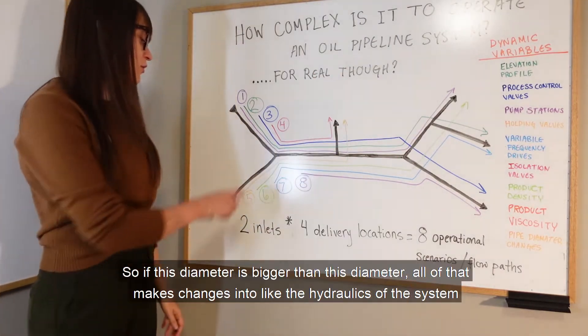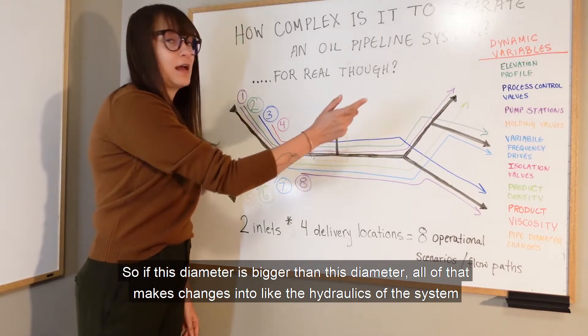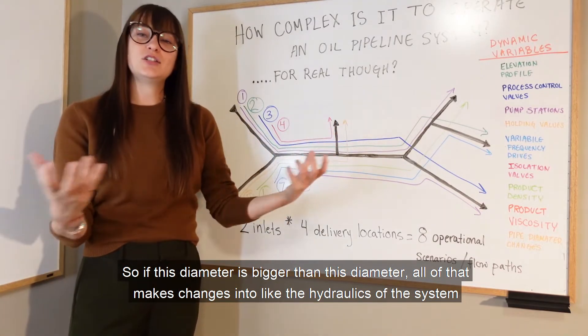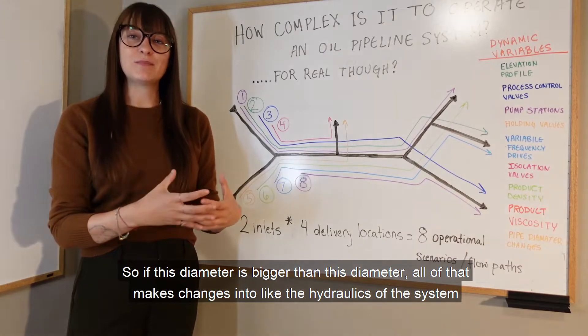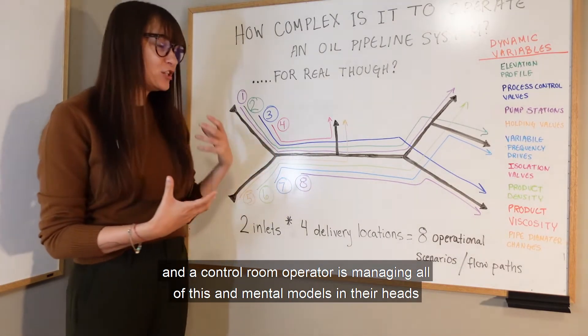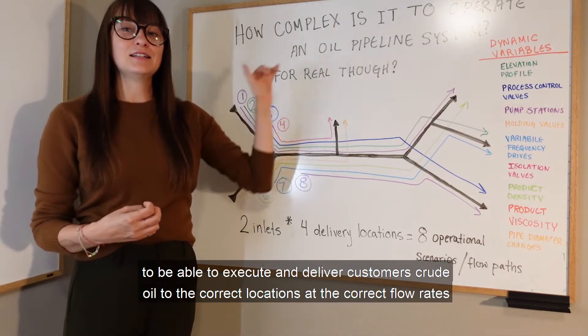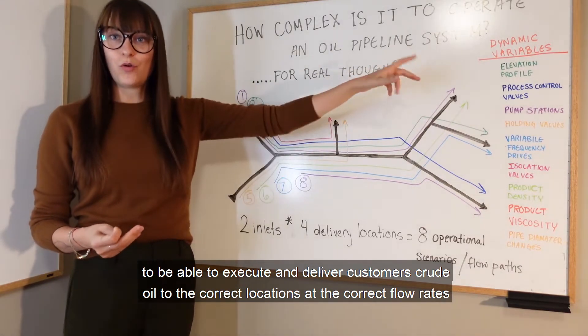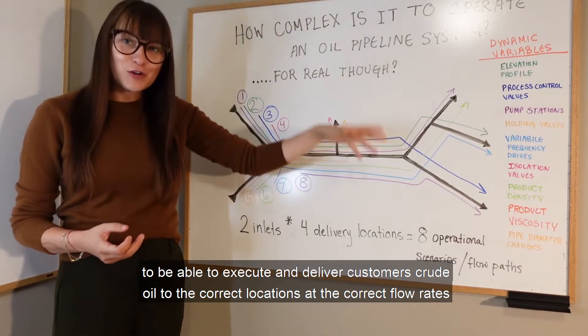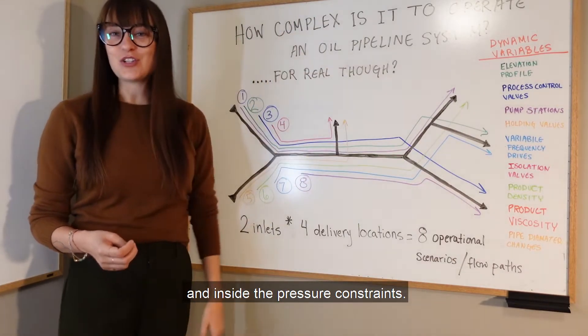And then the pipe diameter changes. If this diameter is bigger than this diameter, all of that makes changes to the hydraulics of the system. A control room operator is managing all of this in mental models in their heads to be able to execute and deliver customers' crude oil to the correct locations at the correct flow rates and inside the pressure constraints.